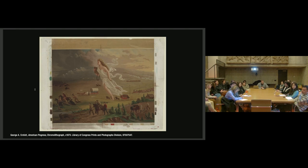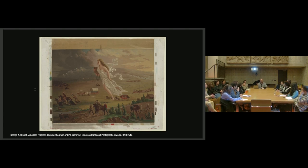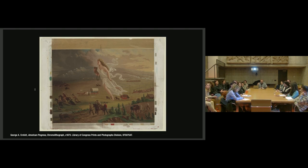Quoting Mitchell again: landscape should be seen as a 'dream work of imperialism, unfolding its own movement in time and space from a central point of origin and folding back on itself to disclose both utopian fantasies and the perfected imperial project and fractured images of unresolved ambivalences and unsuppressed resistance.' For today's presentation — a small piece of a paper I'll be giving at SAH and a larger chapter in a book — I'm addressing several of these utopian fantasies and unresolved fractures by analyzing the material artifacts, those monuments and rock pyramids, erected by the early boundary commissions. This requires both material analysis of the monuments themselves and analysis of the monuments as media objects.